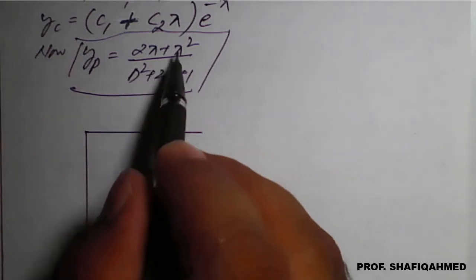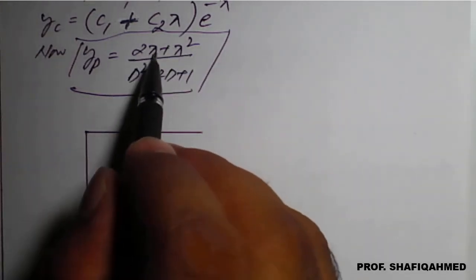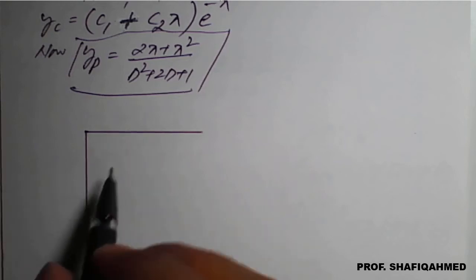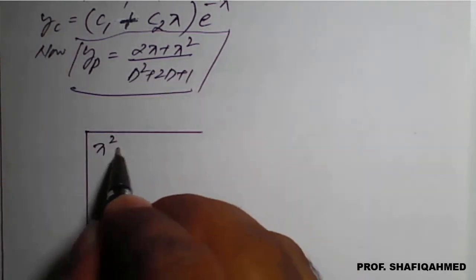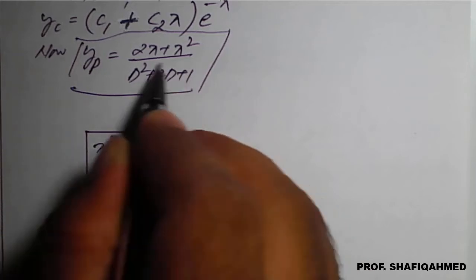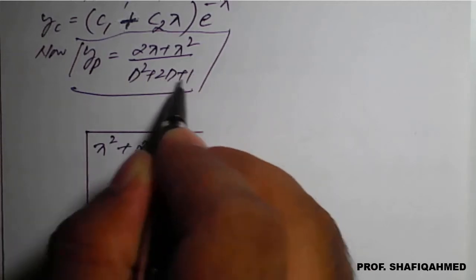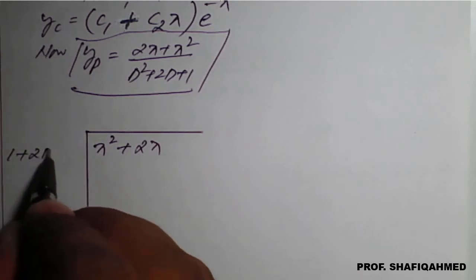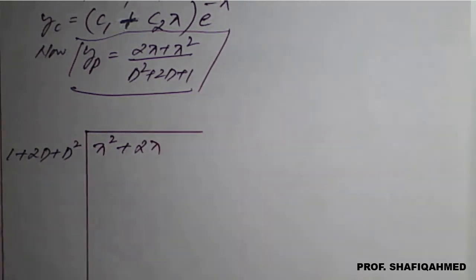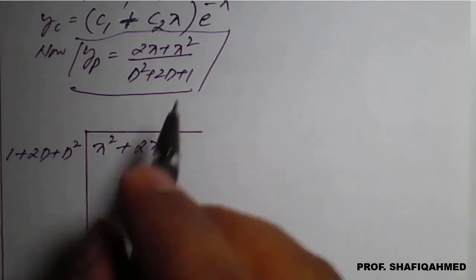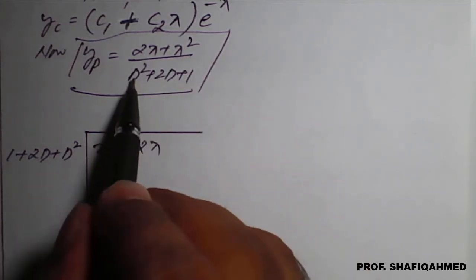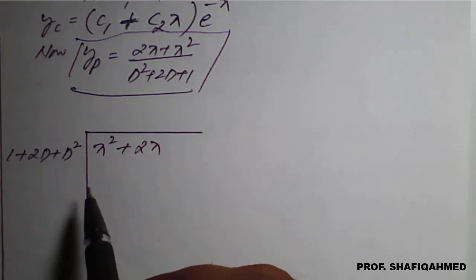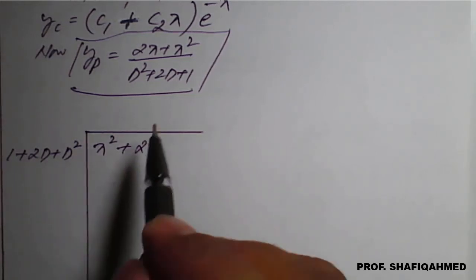In the division method, the numerator — that is 2x plus x square — is supposed to be written in descending order, that is highest power first, then the lowest. The denominator, that is the divisor, is supposed to be in ascending order: 1 plus 2D plus D square. This rule is very important: numerator in descending order and denominator in ascending order; otherwise, we will not get the proper quotient.